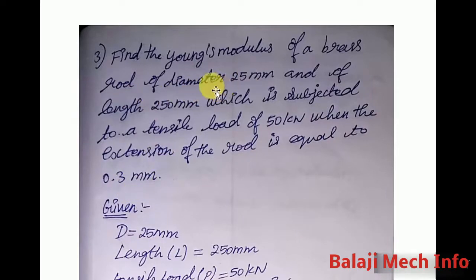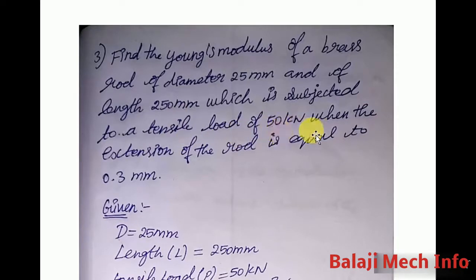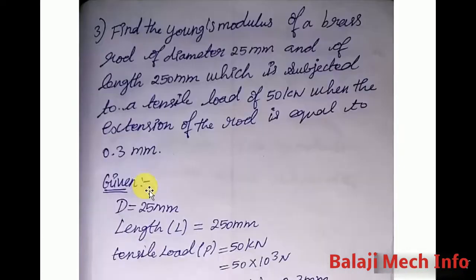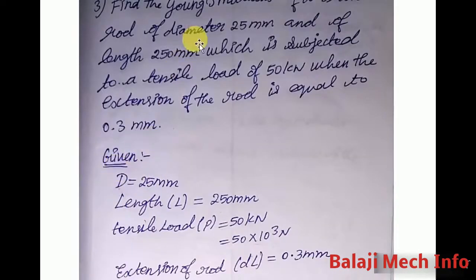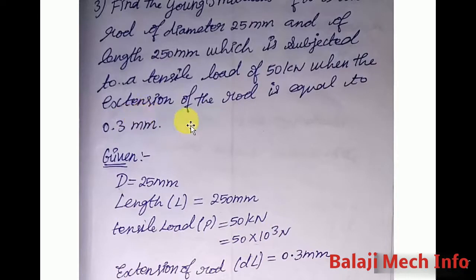For the next problem (6 marks): the diameter of the rod is 25 mm, the length of the rod is 250 mm, it is under a tensile load of 50 kN. The elongation of the rod, DL, is 0.3 mm. The tensile load is 50 × 10³ N.